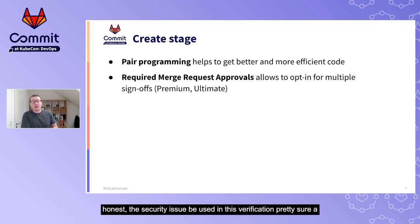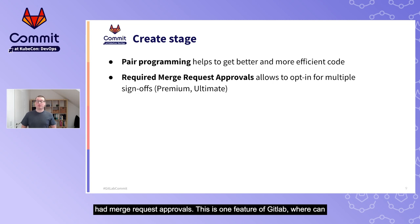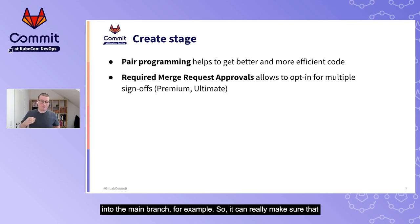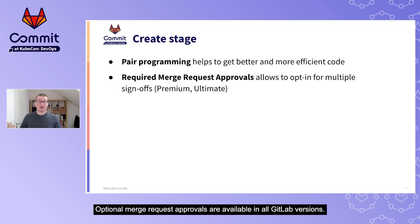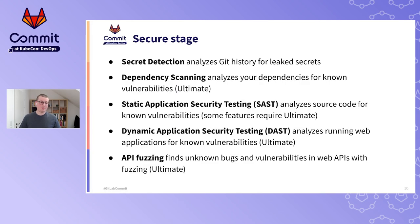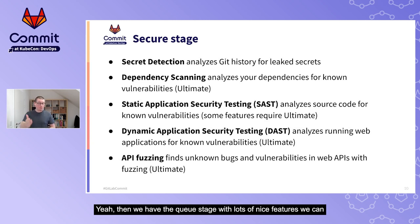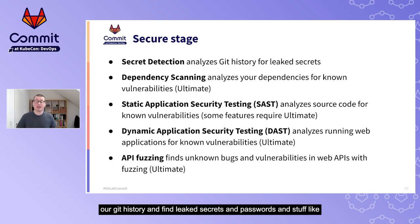Also for the create stage: require merge request approvals. GitLab can enforce that a merge request needs approval before merging into the main branch. This is a Premium or Ultimate feature, though optional merge request approvals are available in all GitLab versions. For the secure stage, GitLab offers secret detection - scanning your git history to find leaked secrets and passwords in code.